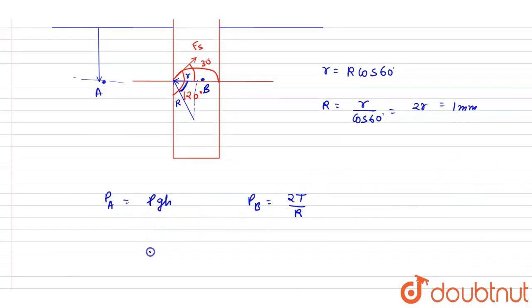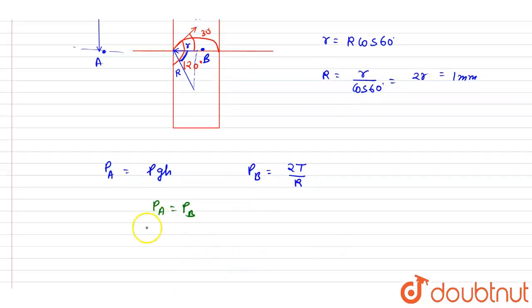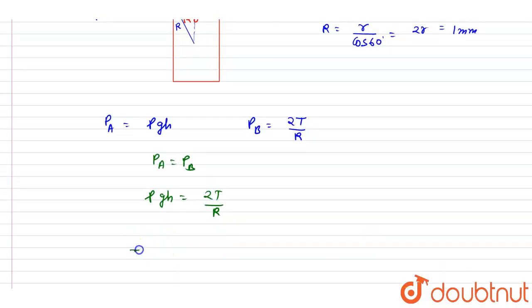You can equate the two. And we want T in the question. So if I equate, I will write down P_A equals P_B since these two points A and B are at the same horizontal level. So rho g h equals 2T by R. And we want T here, so I will write down T equals rho g h R by 2.